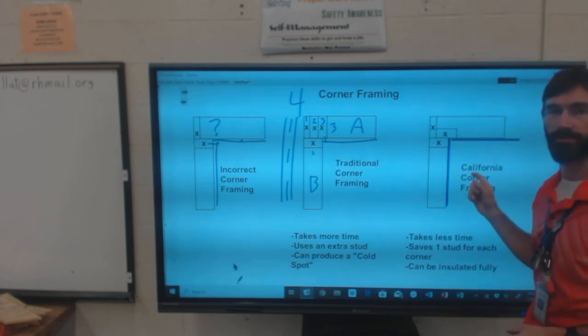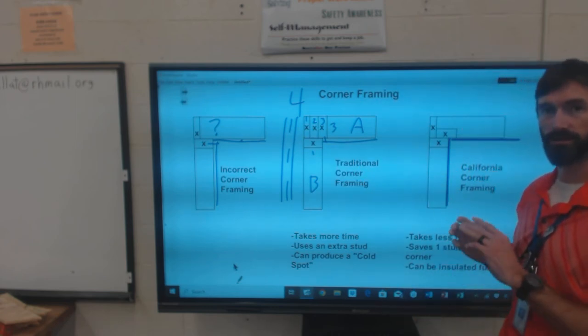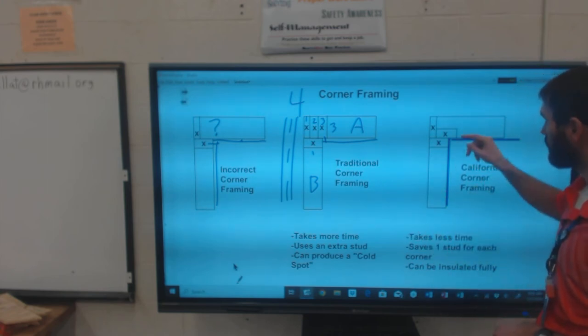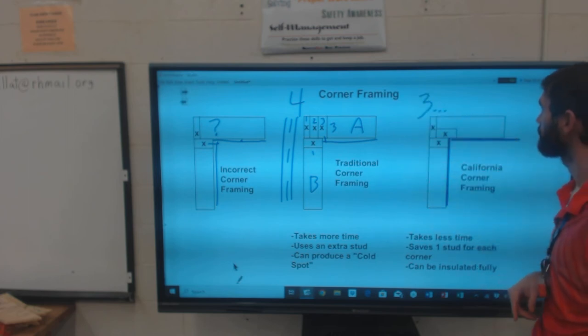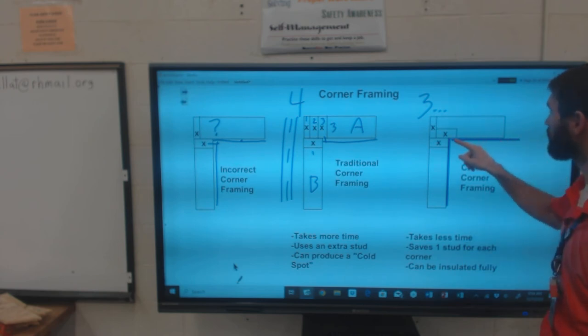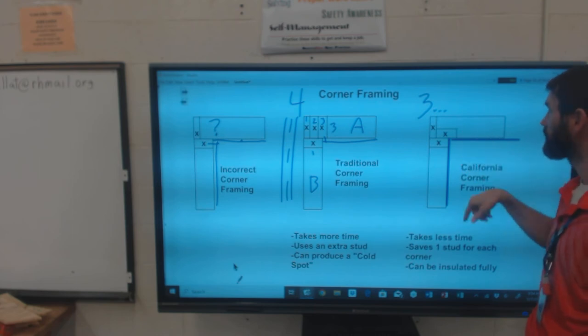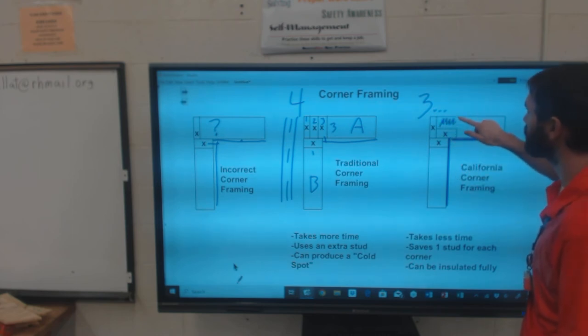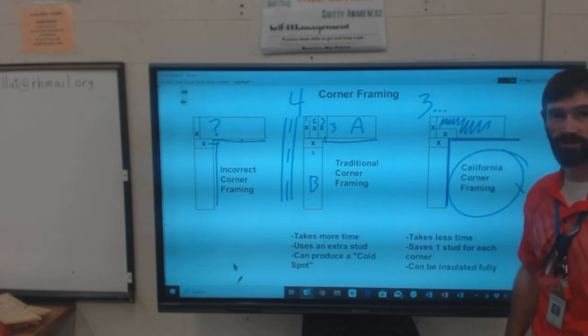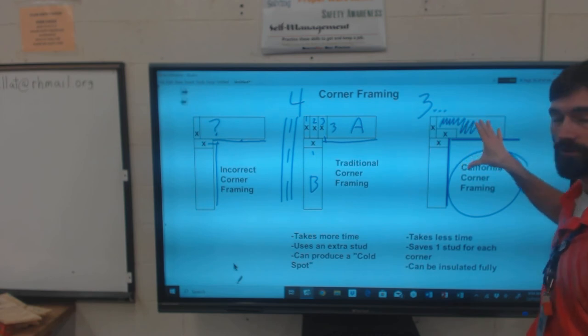But the California corner, this is the best option here. Number one, it takes less time. Number two, it only uses three studs instead of four. So it uses one less stud for every corner. And it does provide a place for your interior drywall or interior wall covering to connect. And you can tuck insulation behind here. This is the best option that there is, and this is what I want y'all working with.